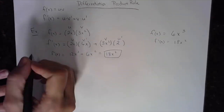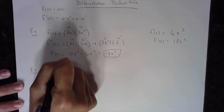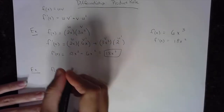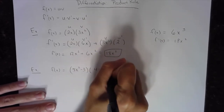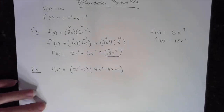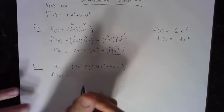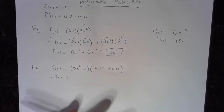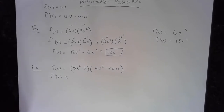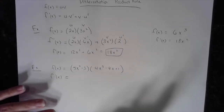Let's do another one. Let f of x equal (5x squared minus 3) times (4x cubed minus 4x plus 1). Again, this is an example where we don't technically need the product rule, but we're practicing it. Later, when you know all your rules, you'll identify the quickest method — but right now we're using the product rule on purpose.